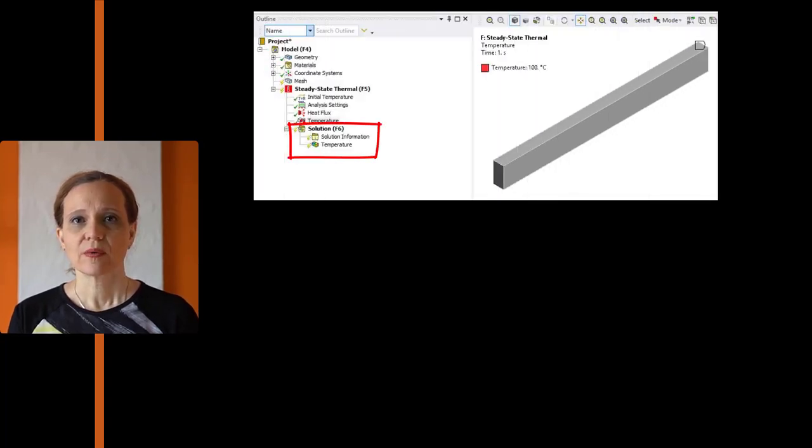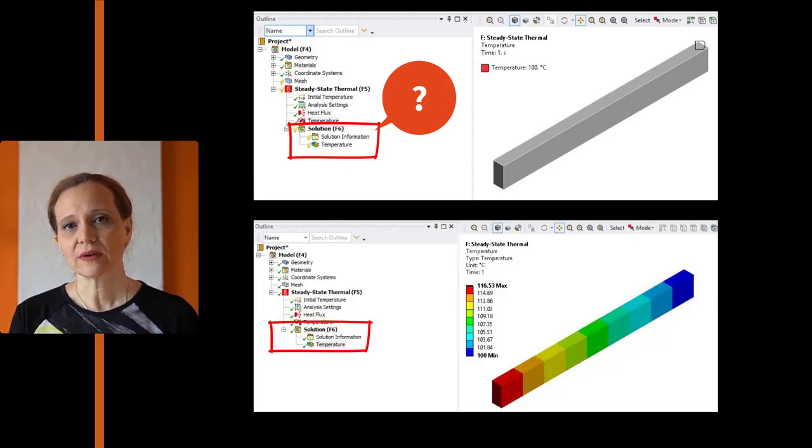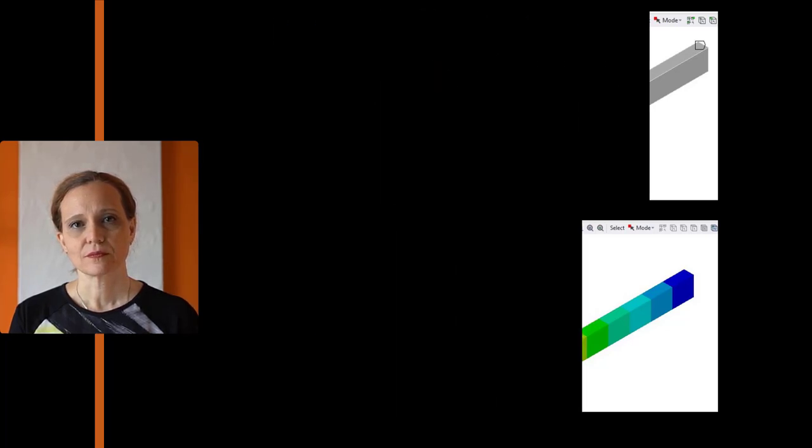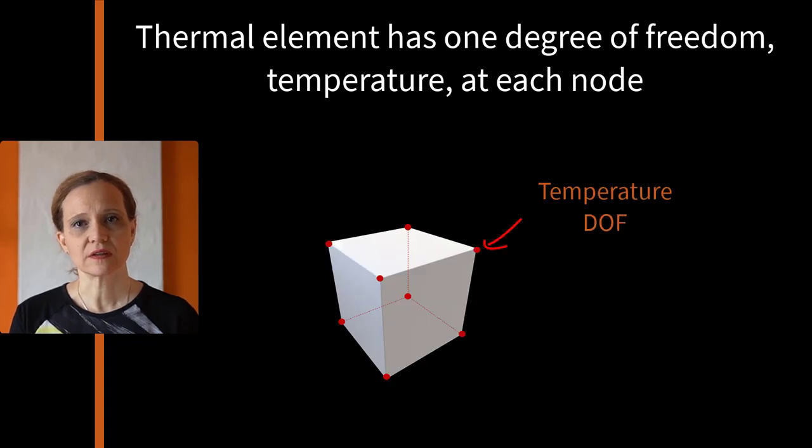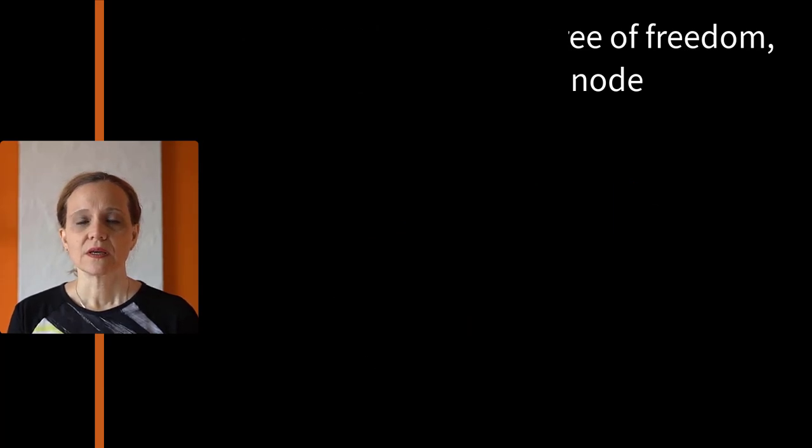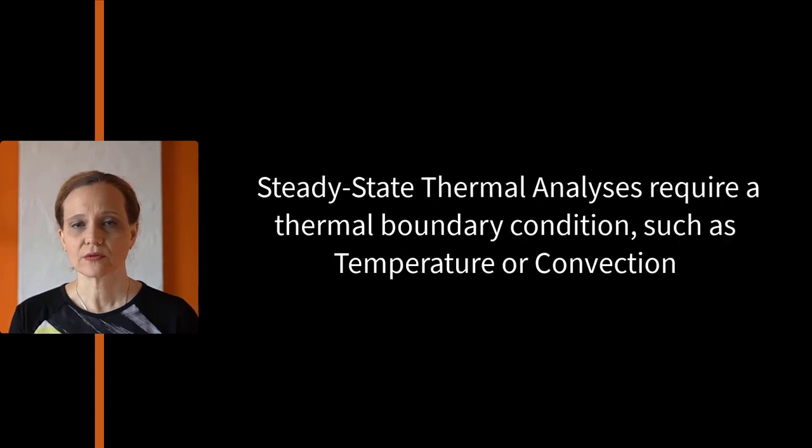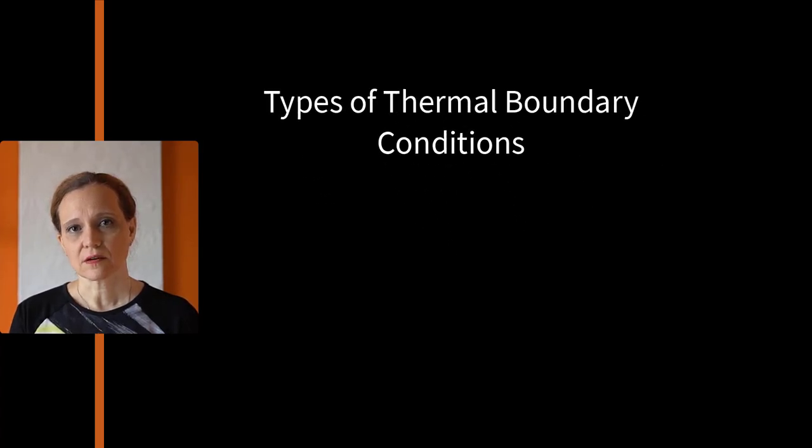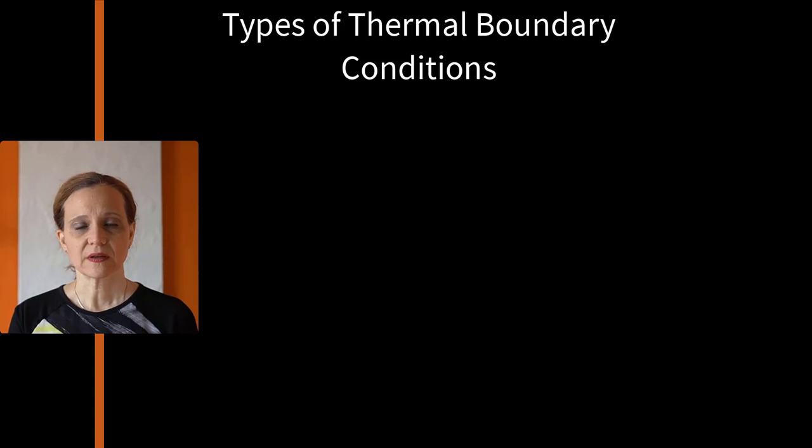In ANSYS mechanical, we can solve heat transfer problem in solids. Such an approach is useful when the temperature distribution is unknown, but we want to calculate temperature field. ANSYS mechanical uses thermal elements with a single degree of temperature at each node. It is important to remember that thermal analysis can be solved without boundary conditions such as temperature and convection. Let's see the thermal boundary conditions available in ANSYS mechanical.